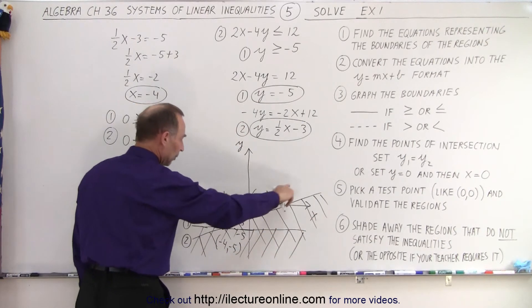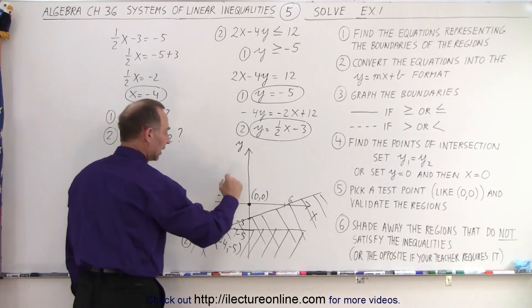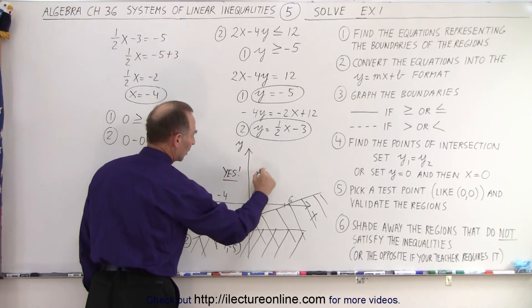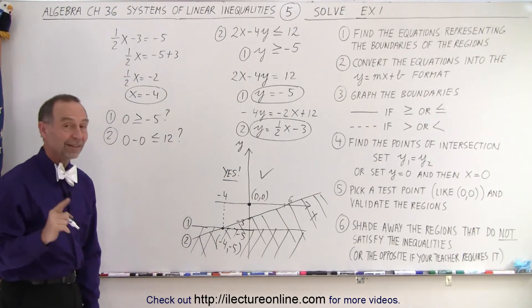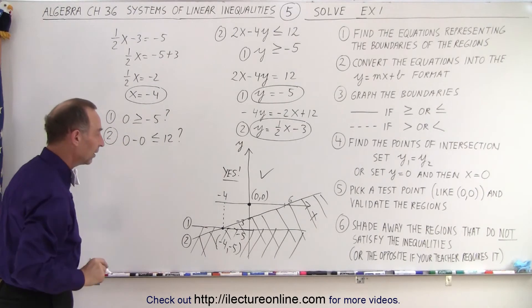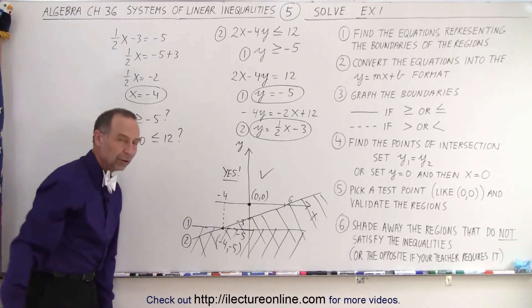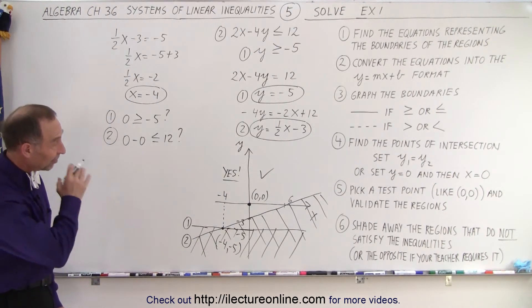Which means that the only remaining part, which is right here, is the good region. Yes, this is the region that we're looking for, the region that satisfies both of the inequalities at the same time. What's scratched out means it doesn't belong to the solution. And that is how it's done.